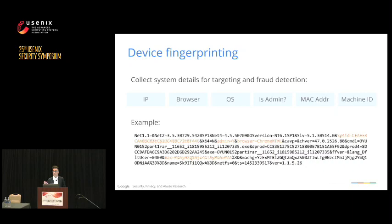That fingerprint sent to the command-and-control server usually consists of about six things: an IP address for geolocation, the browser, the operating system, and whether administrative permissions are available — which dictates the level of control that bundled software will have. They also include the MAC address and machine ID to combat fraud, so publishers can't claim they installed 100 bundles on one machine. They're trying to combat abuse from publishers and advertisers within the network.